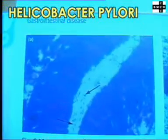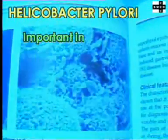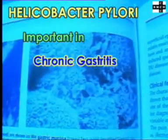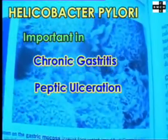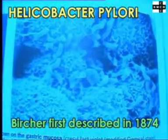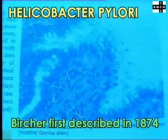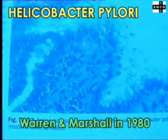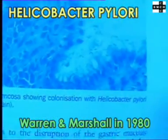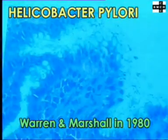Helicobacter pylori: Over the last 20 years, this organism has proved to be of overwhelming importance in the etiology of a number of common gastrointestinal diseases such as chronic gastritis, peptic ulceration, and gastric cancer. It was first described in 1874, and in 1980 Warren and Marshall ingested the organisms to confirm that Koch's postulates could be fulfilled with respect to gastritis.